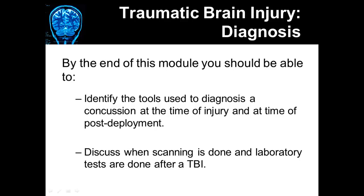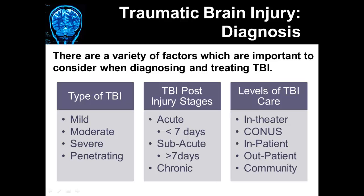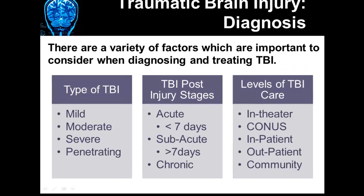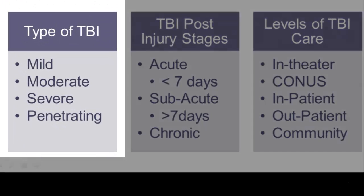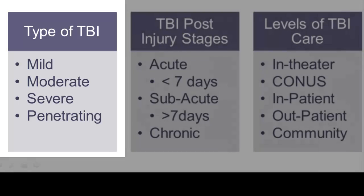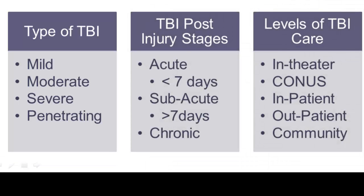There are a variety of factors considered in the diagnosis and treatment of an injury to the brain. There are a variety of types of traumatic brain injury: mild, which is your concussion type of injury; then there's moderate, severe, and there's also penetrating injuries. Depending on the type of injury will also depend on the diagnostic tools used. For example, in penetrating injuries, you're more likely to see scanning used to determine exactly what part of the brain has been penetrated.